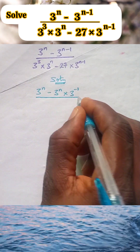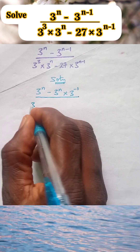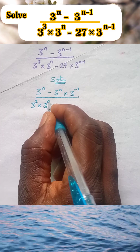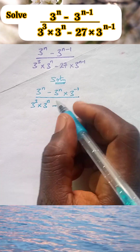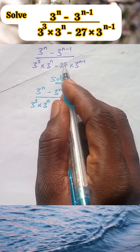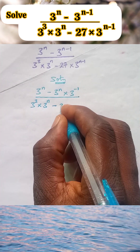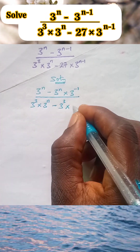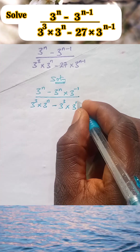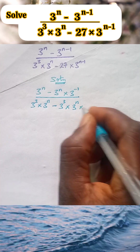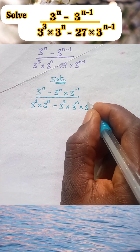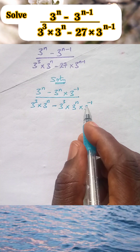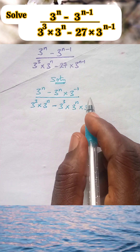So we just expanded it, all over 3 raised to the power 3 times 3 raised to the power n, minus 27 — which is the same thing as 3 raised to the power 3 — times 3 raised to the power n times 3 raised to the power minus 1. Similarly, we expanded what is here to get this.